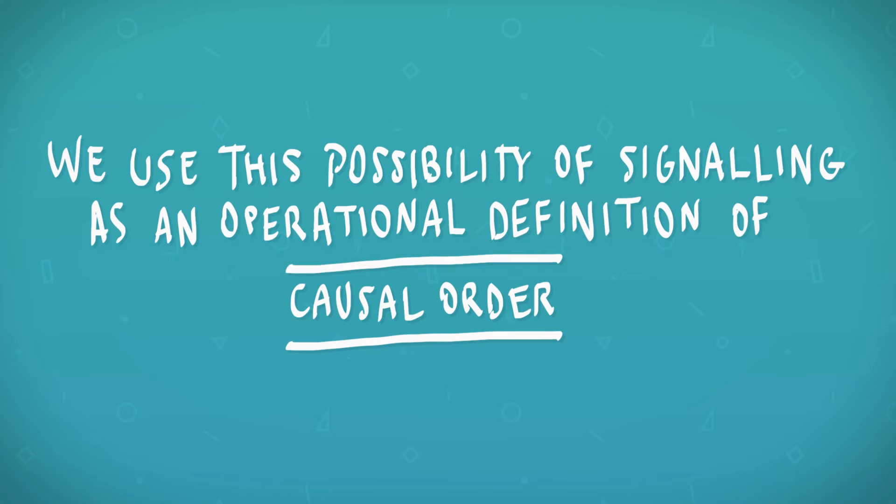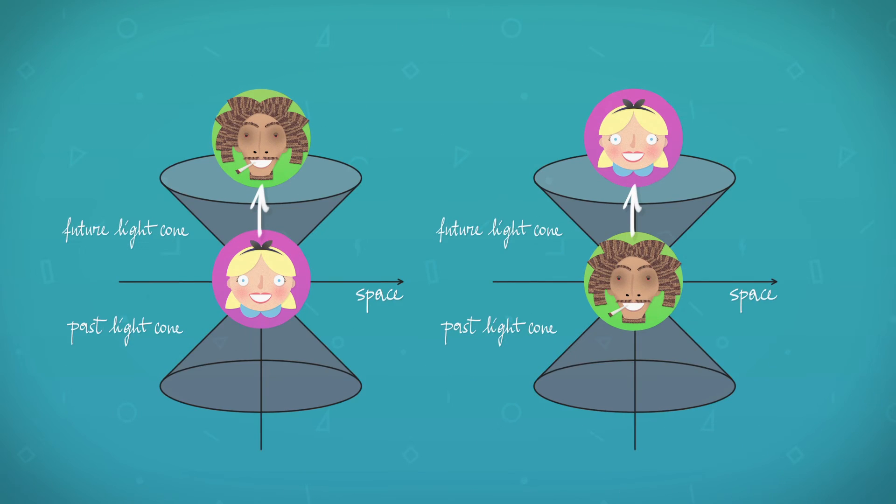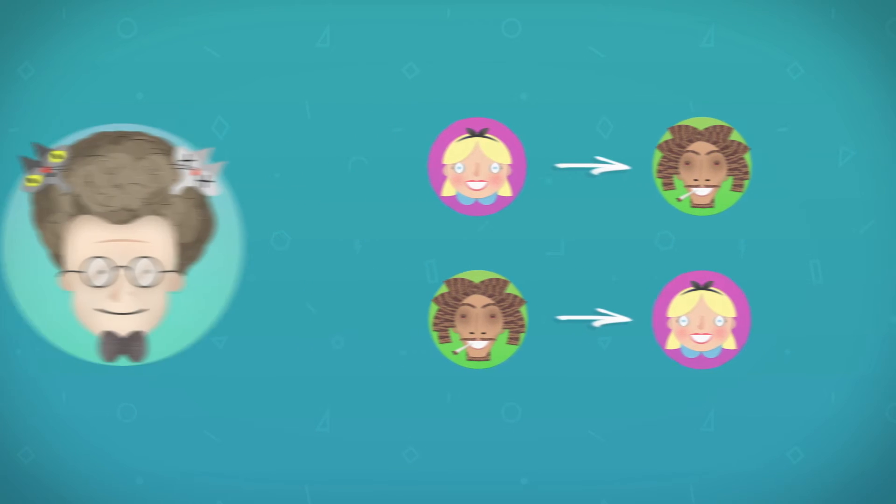We use this possibility of signaling as an operational definition of causal order. This way, we don't need to presuppose a fixed space-time and the fixed causal orders that it would entail.